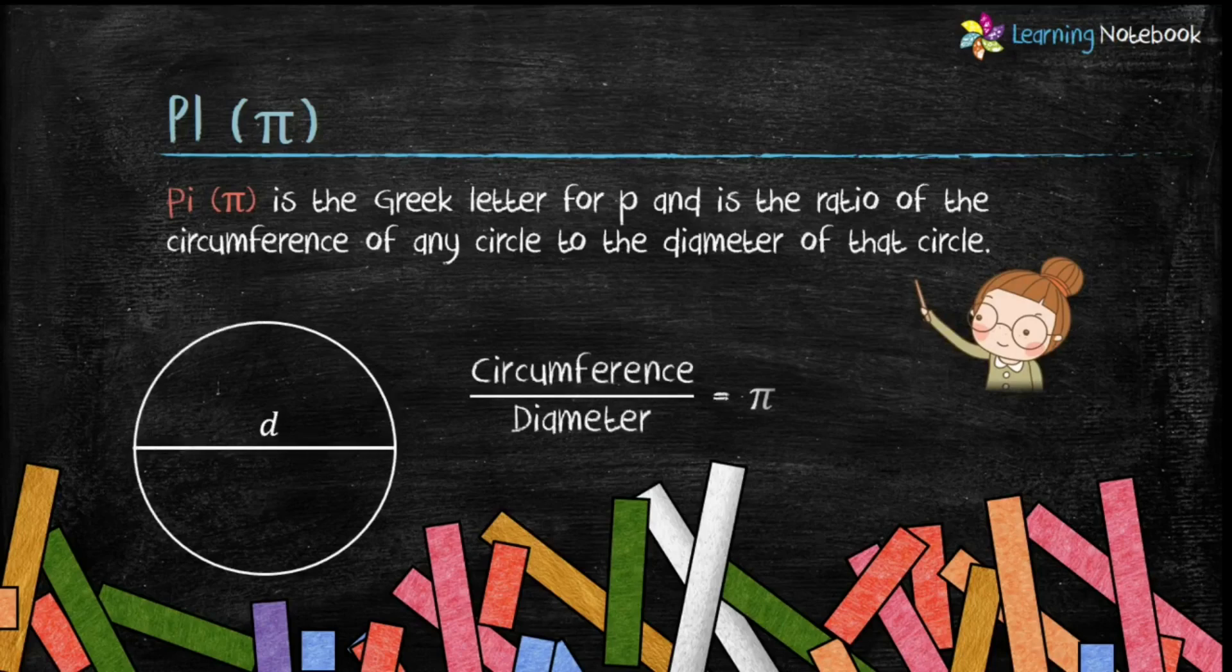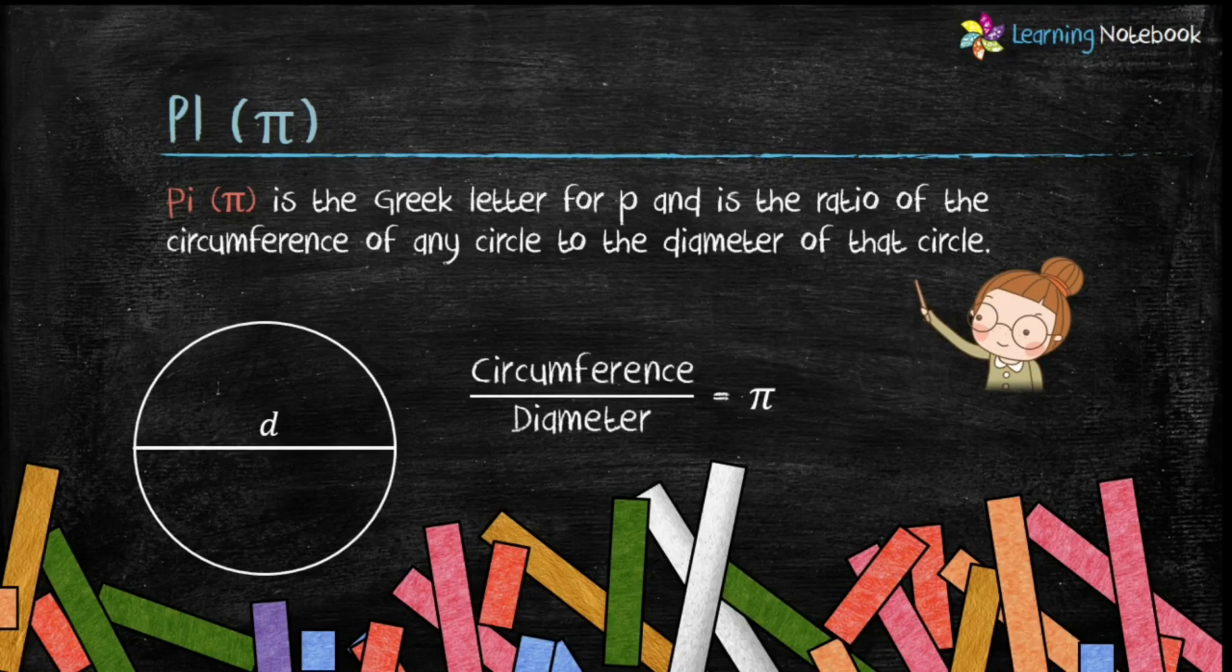Students, pi is the Greek letter for P and it is the ratio of the circumference of any circle to the diameter of that circle. This means regardless of the size of the circle, this ratio will always be equal to pi.